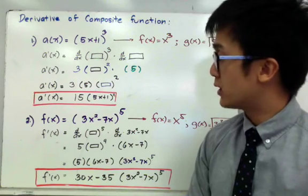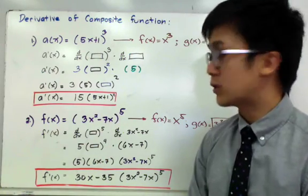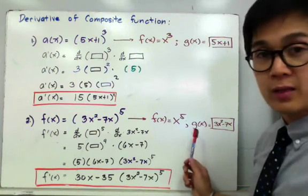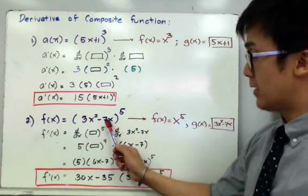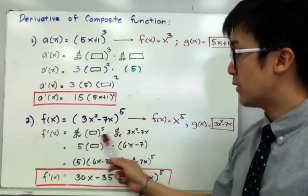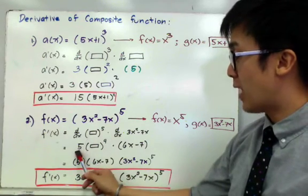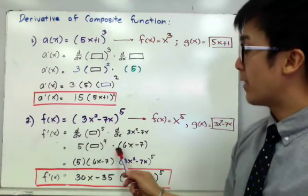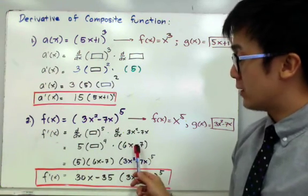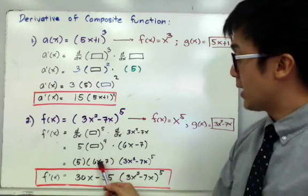For the second example, f(x) = (3x²−7x)⁵. We separate it so that f(x) = x⁵ (the parenthesis to the fifth) and g(x) = 3x²−7x (the inside function). We need the derivative of the parenthesis raised to the fifth power times the derivative of the inside. The derivative of the parenthesis is 5 times the parenthesis to the fourth, and the derivative of the inside, 3x²−7x, is 6x−7.